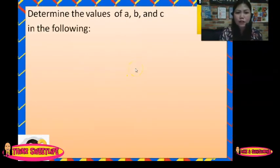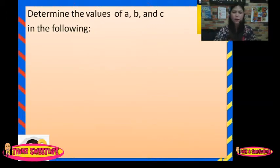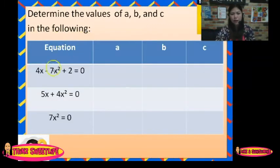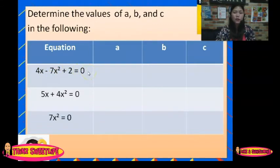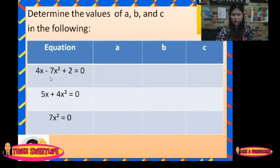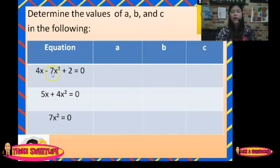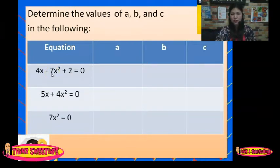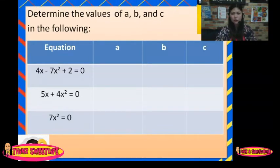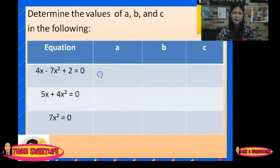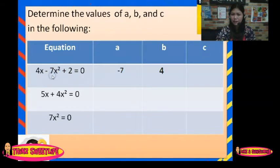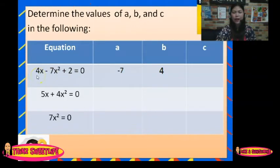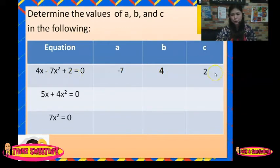We have another example. Determine the values of A, B, and C in the following. We have the equation 4x squared minus 7x squared plus 2 equals 0. First, arrange in general form in decreasing order. The A here is negative 7, B is 4, and C is positive 2.